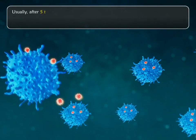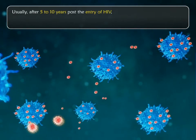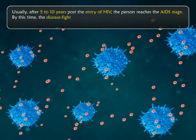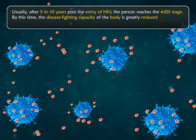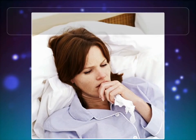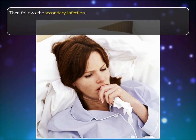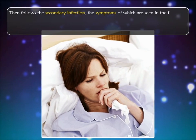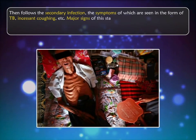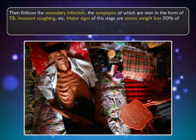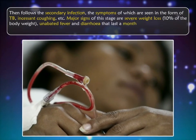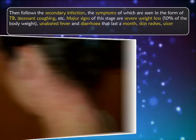Usually, after 5 to 10 years post the entry of HIV, the person reaches the AIDS stage. By this time, the disease fighting capacity of the body is greatly reduced because of a deficient immune system. Then follows secondary infection, the symptoms of which are seen in the form of TB, incessant coughing, etc. Major signs of this stage are severe weight loss (10% of the body weight), unabated fever and diarrhoea that last a month, incessant cough, skin rashes, ulcer and swollen lymph glands.